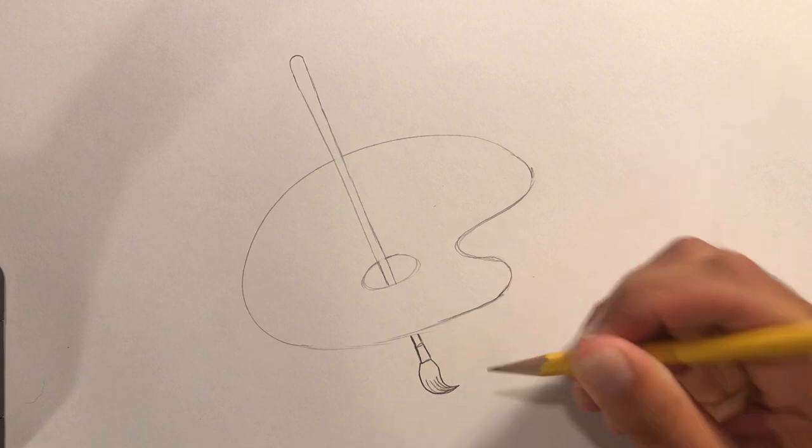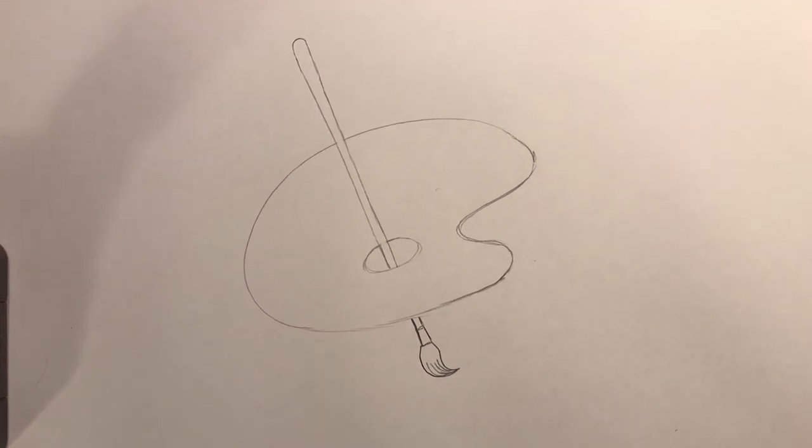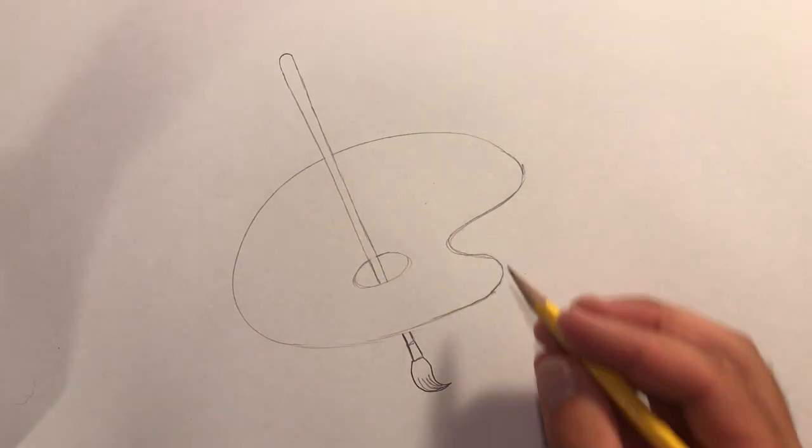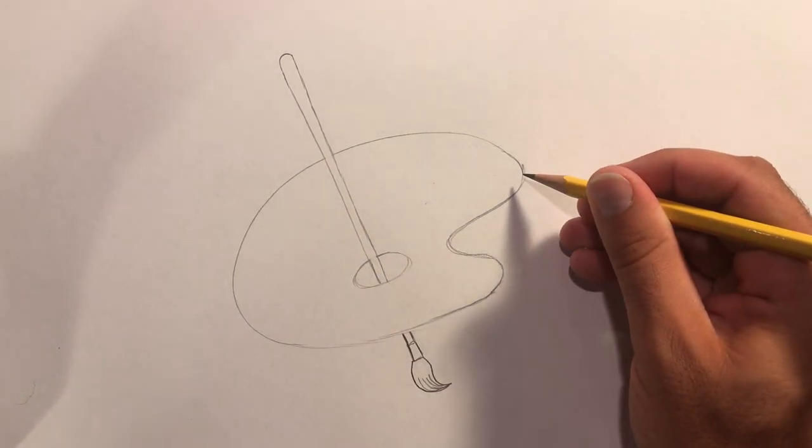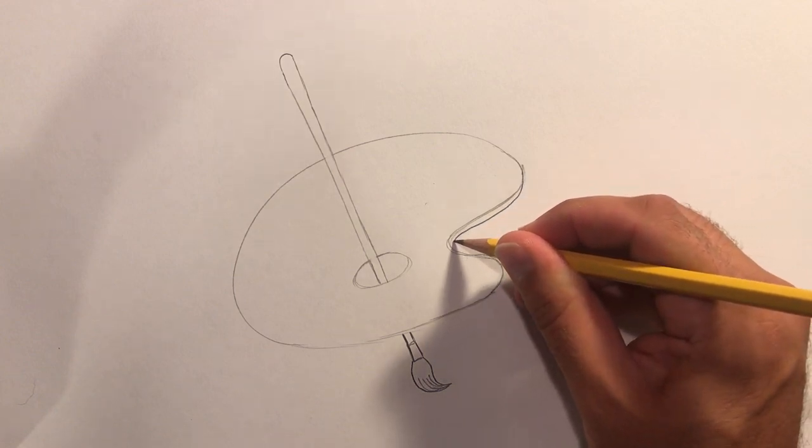We'll give it a little bit of a curve here. It comes out and then connects, and then we can add some lines there. Now we want to give this some thickness to this palette, so we're going to add a line there.